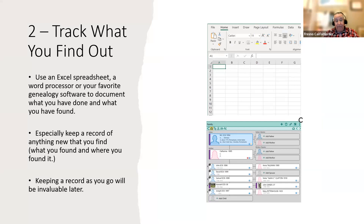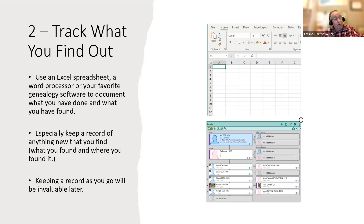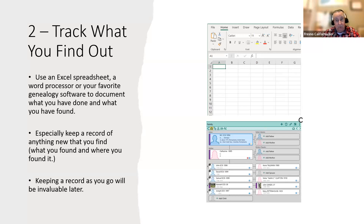You can track what you're gathering on a spreadsheet or in a word processor. Sometimes there are even programs written to help you keep track of your research. Or you might have a genealogy software program — your own database — where you can make changes and then delete them later if you want, so nobody else is being led astray. But really keep a good record of what you found and where you found it. Those will be the things that help when it's time to put this into the tree with the right sources.